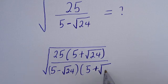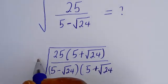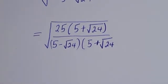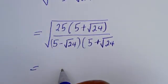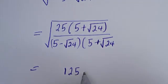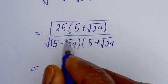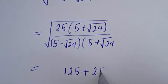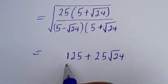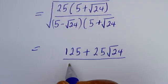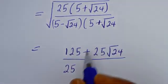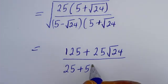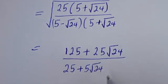This is equal to: in the numerator, 25 times 5 is 125, then plus 25 times root 24, that is 25 root 24. In the denominator, 5 times 5 is 25, then 5 times root 24 is plus 5 root 24.